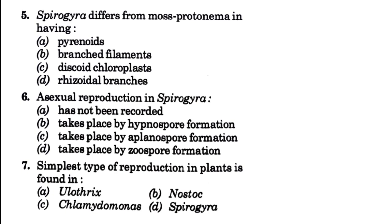Then question number 5: Spirogyra differs from moss protonema in having — blank. Option A is pyrenoid, option B is branched filament, option C is discoid chloroplast, option D is rhizoidal branches, and the answer is option A, that is pyrenoid.